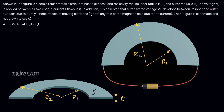A voltage V0 is applied between its two ends and a current I flows in it. We are placing a battery here and applying a voltage V0 across this strip, and current I flows through it.